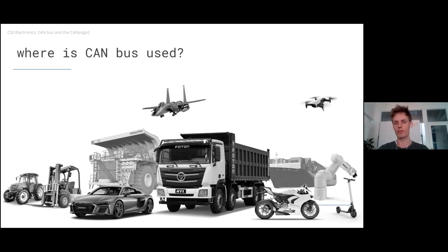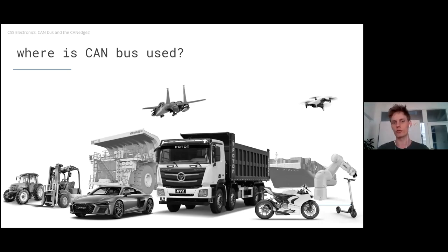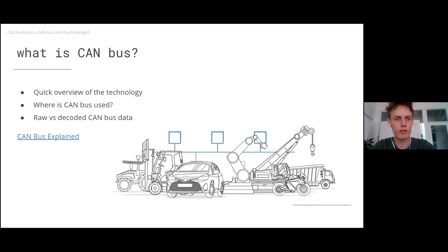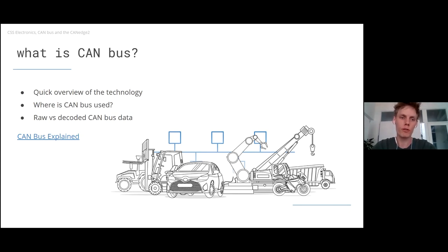Those are some of the typical segments we cater to, but CAN bus is also widely used within industrial automation — things like robotics and production machinery also use CAN bus. I won't go fully in depth on how CAN bus works; you can read the small intro linked in the slides. Suffice to say, it is an extremely popular and widely used protocol, and what we do is essentially help record CAN bus data from different applications.